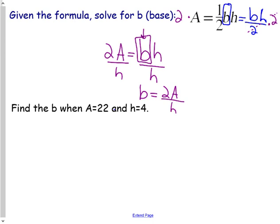Next, find what the B equals when A is 22 and H is 4. So B equals 2 times, now 22 for A and H is 4. And then simple math: 2 times 22 is 44. 4 is still in there. 44 divided by 4 is 11. So 11 equals B.